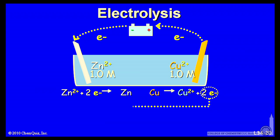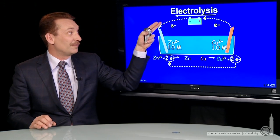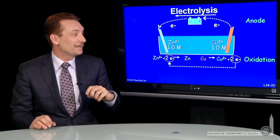The electron flow overall is from copper metal to zinc ions to form zinc metal and copper ions. The general flow of electrons is indicated here.